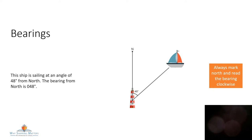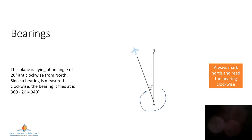This ship is sailing at an angle of 48 degrees from north, so the bearing from north is 048. Here's a trick: always remember to mark north and read your bearing clockwise. This plane is flying at an angle of 20 degrees anti-clockwise from north. You can measure clockwise, or you can use maths to help you. Since a bearing is measured clockwise, the bearing it flies at will be 360 degrees minus 20 — that's 340 degrees.